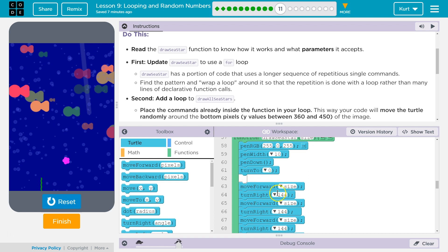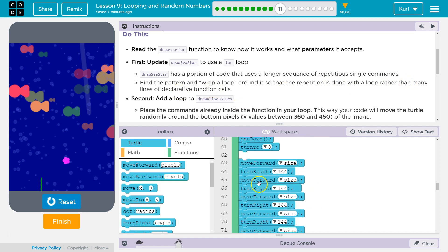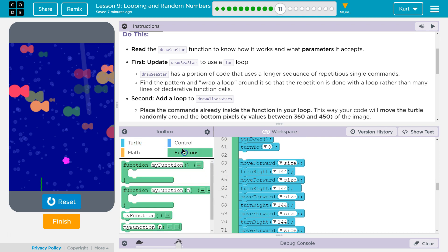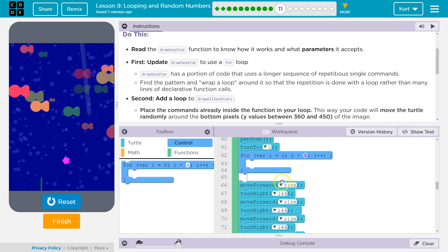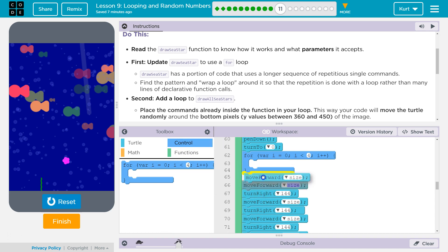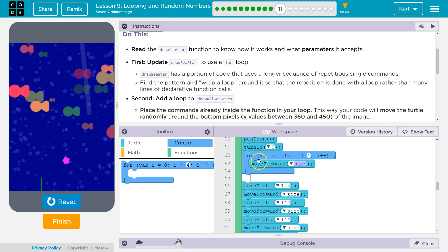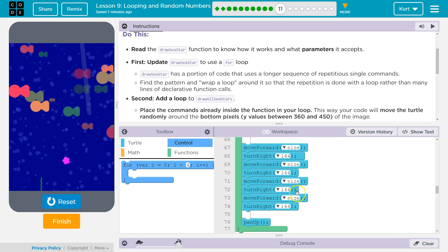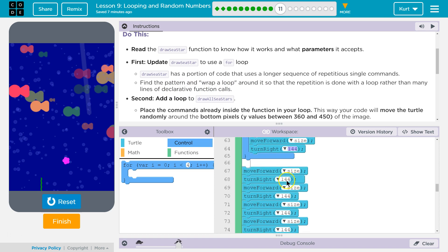They want us to use a loop to eliminate redundancy, right? So, repetition is done with a loop rather than many lines of declarative function calls. That's a fancy way of saying this stuff. Instead of using these lines of Move Forward, Turn Right, because they're all the same, let's use a function call, a loop. Because these Move Forwards, Turn Right, they're calling them declarative function calls because Move Forward and Turn Right are technically functions. We just don't see their code.